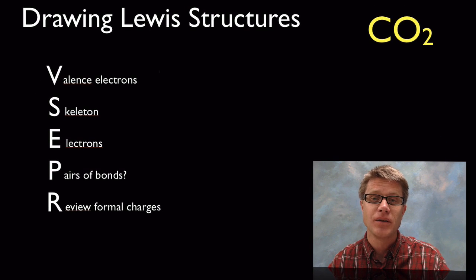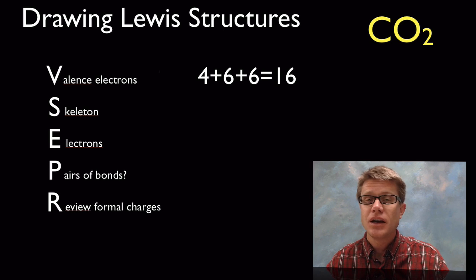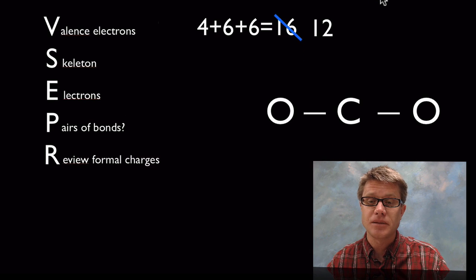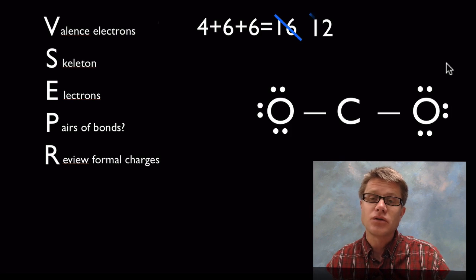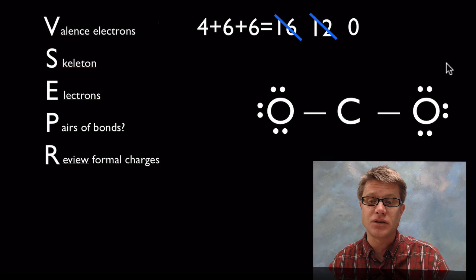Now let's look at carbon dioxide. First, add up the valence electrons: four for carbon plus six for each oxygen gives us 16. Now sketch out the skeleton — a quick tip: if you have an atom written by itself followed by other atoms, that first atom is generally in the middle. So carbon goes in the middle. Using four electrons for the bonds, I'm back to 12 valence electrons. I add them to the electronegative oxygens on the outside, using up all 12. But carbon is not happy.